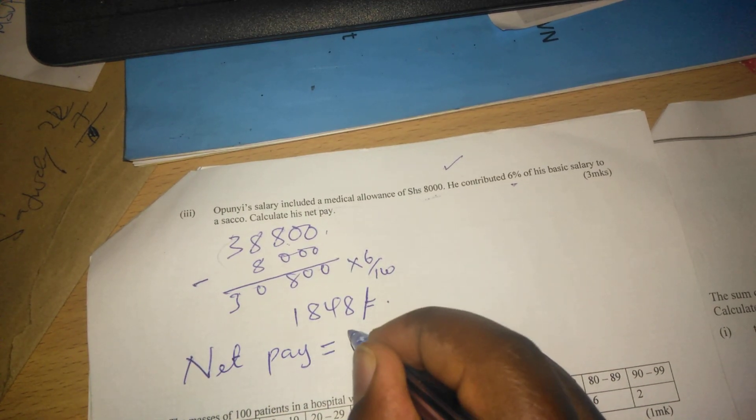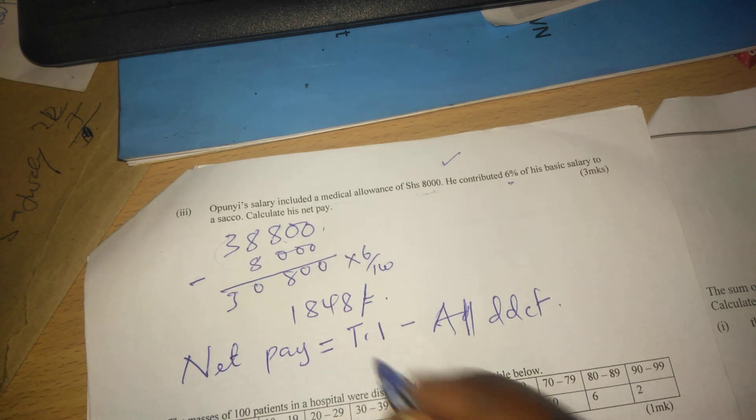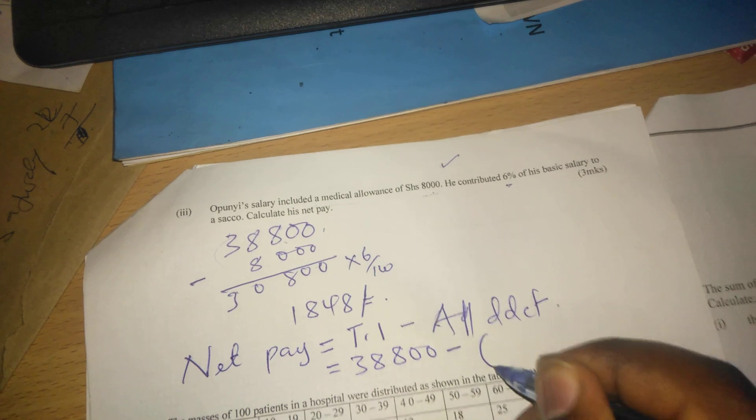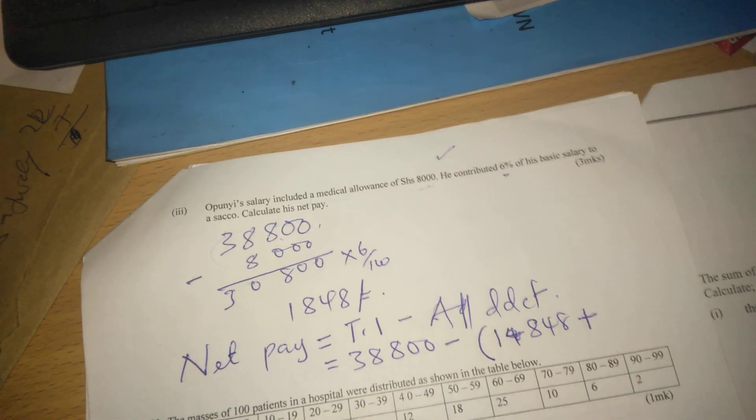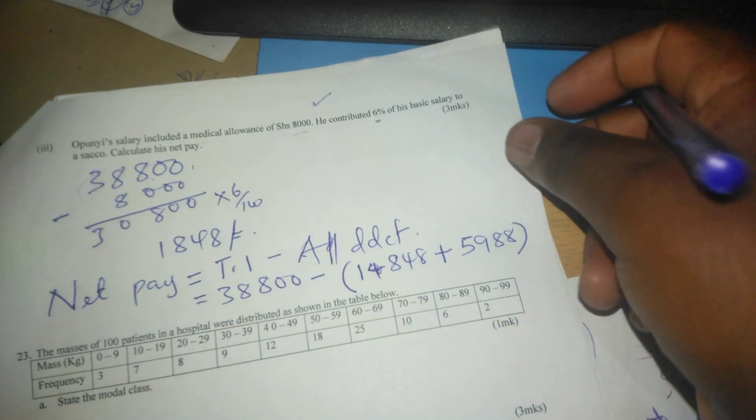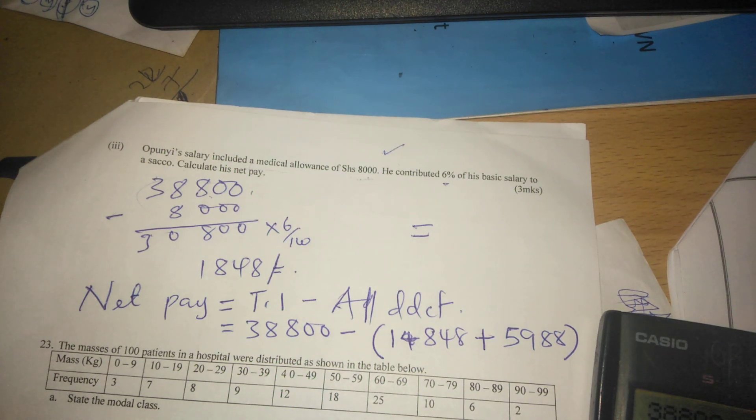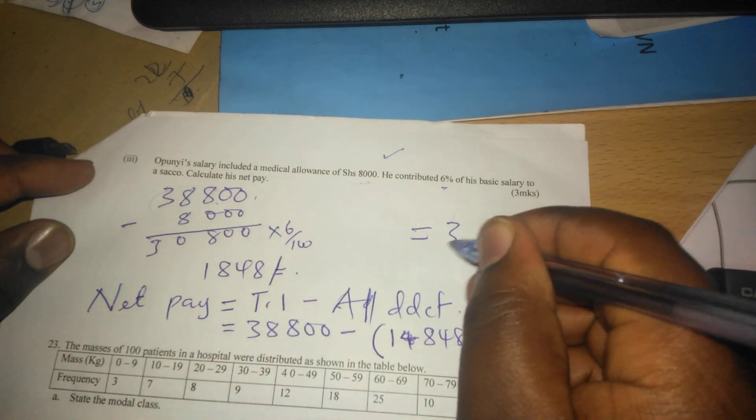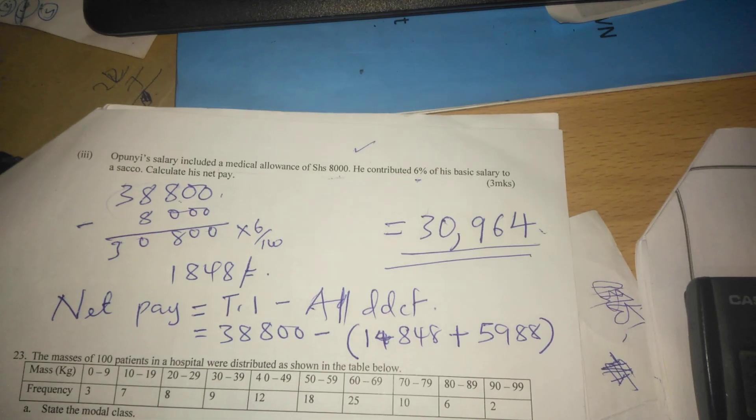For us to get net pay, we get the taxable income and subtract all deductions. We get 38,800, and all deductions include the 1,848 which he pays to a SACCO, and the tax he pays every month is also among the deductions, which is 5,988. Therefore, when we subtract 38,800 minus 1,848 minus 5,988, we get 30,964 shillings. This is the amount he gets every month.